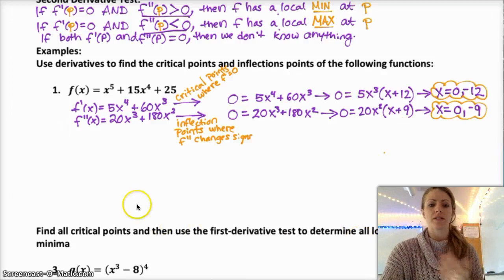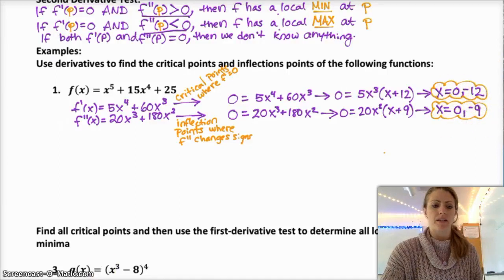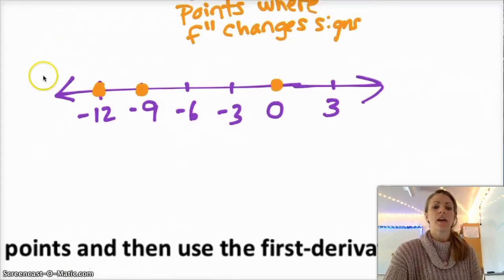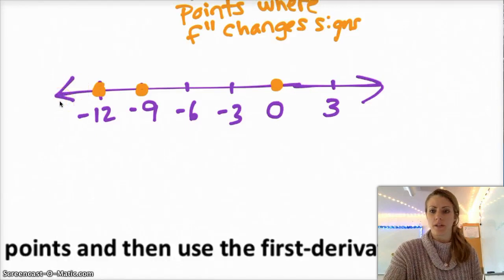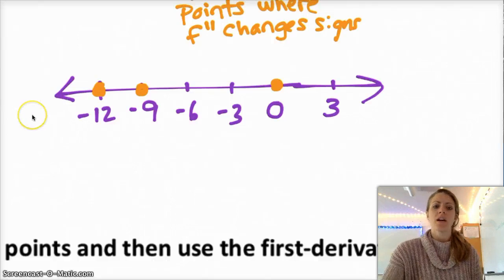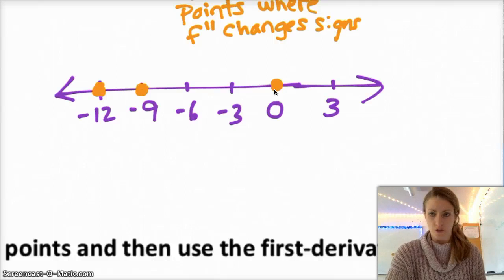What I personally like to do is make a nice long number line and plot my critical points and also the points where my second derivative is 0. At this point, you want to look at the signs of the first derivative and of the second derivative on either side of your critical points. My two critical points are negative 12 and 0, so I'm going to start with finding the signs of the first derivative.